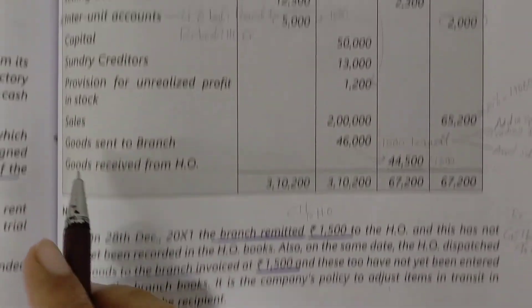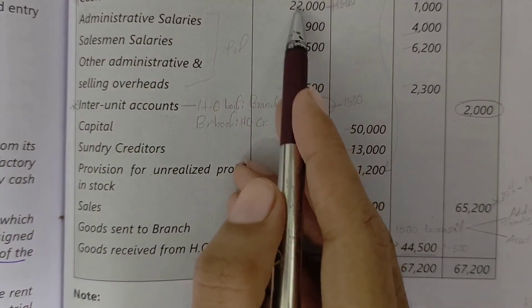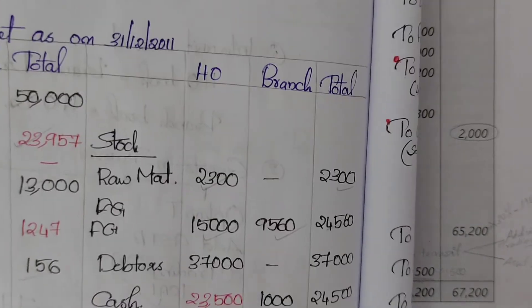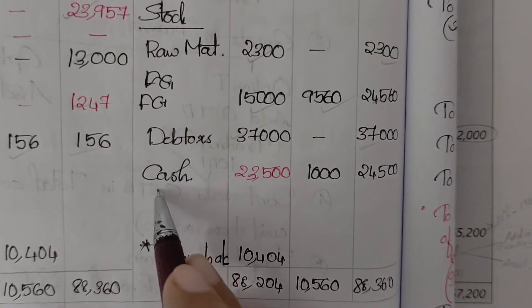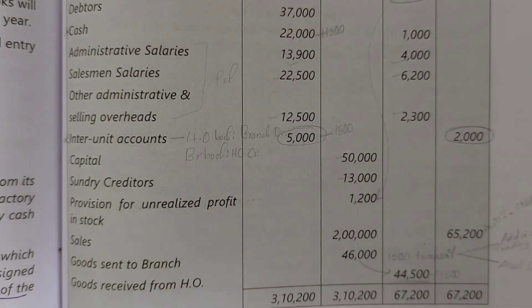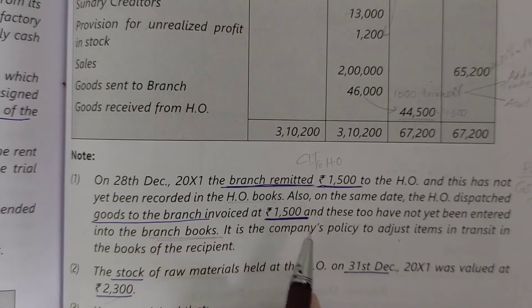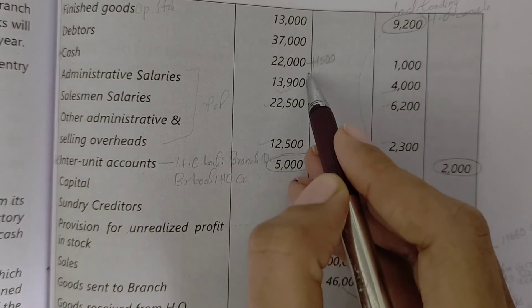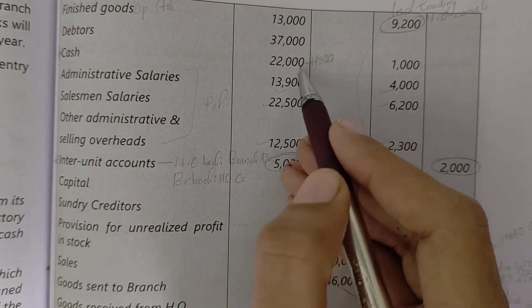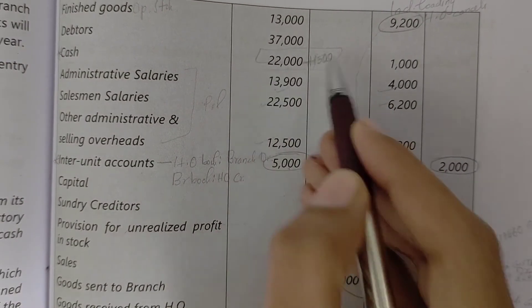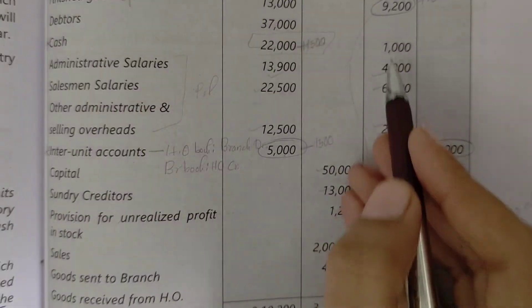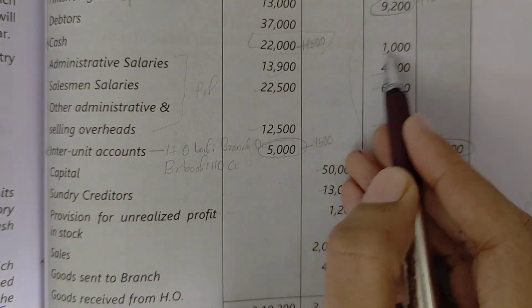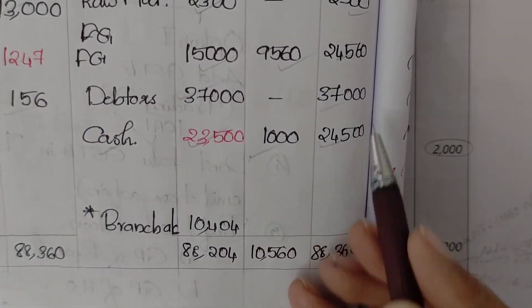Next asset: debtors 37000 at head office. Then cash: after the transit adjustment, head office cash balance is 22000 plus 1500 equals 23500. Branch cash balance is 1000. Total cash is 24500.